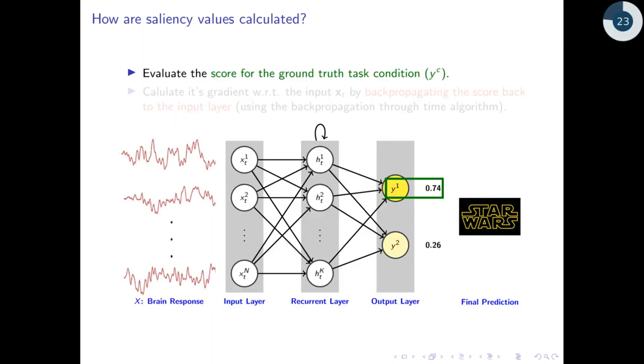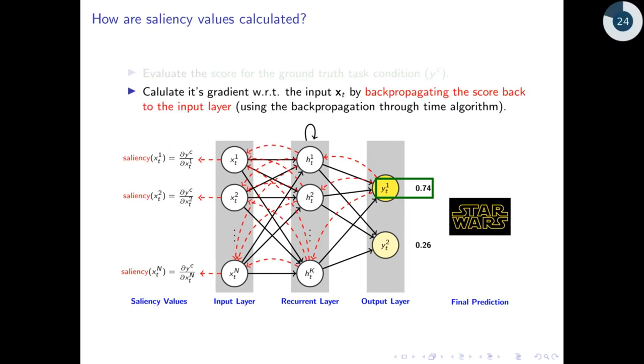To calculate saliency values, we need not perturb every input feature one by one. Instead, we can calculate them using a simple two-step process. We pass the brain responses into the decoder to obtain the score for Star Wars highlighted here in green. We then propagate the score from the output layer back to the input layer using the backpropagation through time algorithm. This procedure simultaneously calculates saliency values for all the input features.